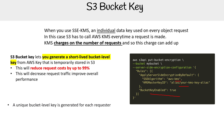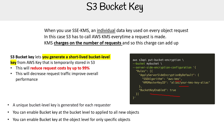A few other things: a unique bucket-level key is generated for each requester, so it's not one key for the entire bucket globally, but one per requester. You can enable bucket key at the bucket level to apply to all new objects, or in the S3 API you can enable it at the object level for only specific objects. S3 Bucket Key can be enabled for SSE-S3 and SSE-KMS, though it makes more sense for SSE-KMS if cost is the reason. If it's just for performance, then SSE-S3 can also benefit.